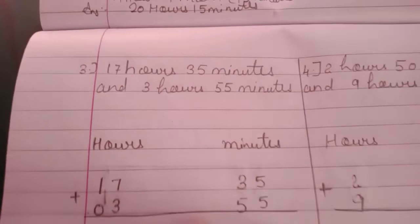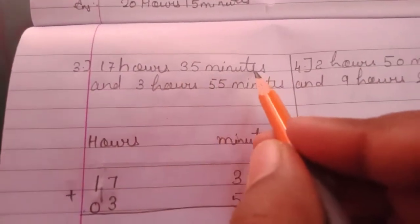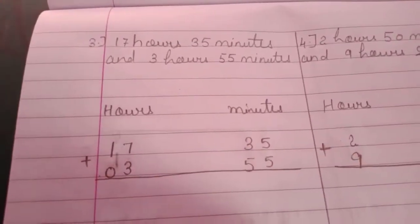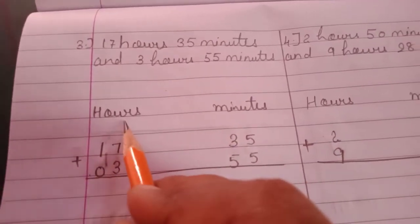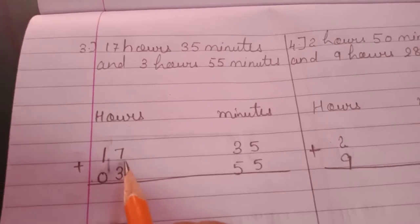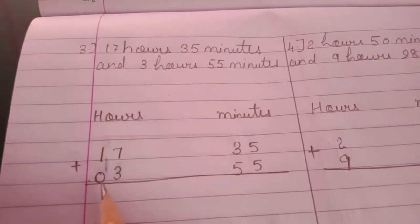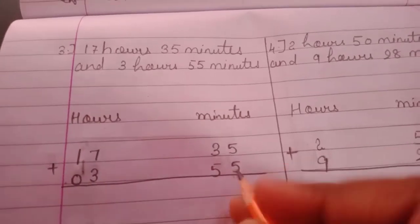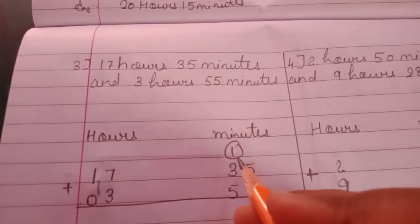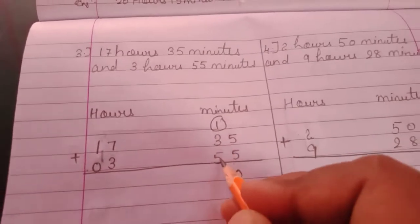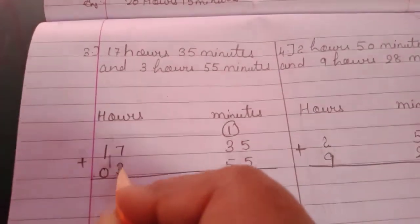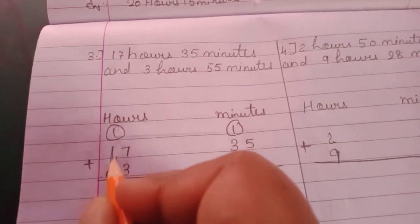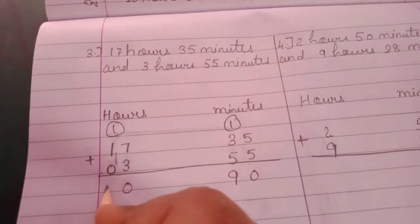Now number 3: 17 hours 35 minutes and 3 hours 55 minutes. First we will arrange in a vertical column. 17 hours 35 minutes. So 5 plus 5 is 10 — write 0 down, 1 carried over. 1 plus 3 is 4, 4 plus 5 is 9. Then 7 plus 3 is 10 — write 0 down, 1 carried over. 1 plus 1 is 2, 2 plus 0 is 2.